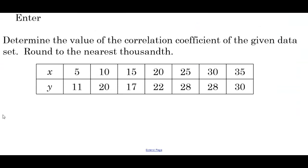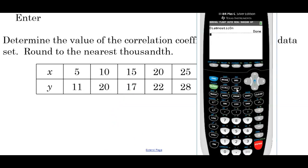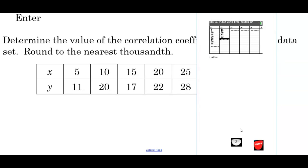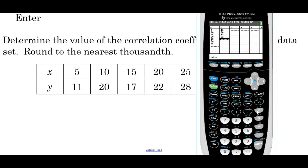To determine the value of the correlation coefficient of the given data set, rounded to the nearest thousandth, we're going to find the linear regression equation the same way we did in the previous video. Hit Stat, Edit, and clear out the list from last time — scroll up to highlight, clear, and enter. So we have L1 values: 5, 10, 15, 20, 25, 30, 35. And for L2 we have: 11, 20, 17, 22, 28, 28, and 30.